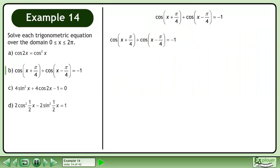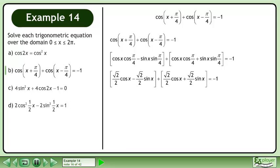Rewrite the original equation. Expand using the cos sum and difference identities. Find the exact value of each trigonometric ratio. Collect like terms.